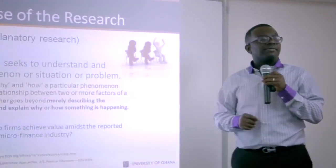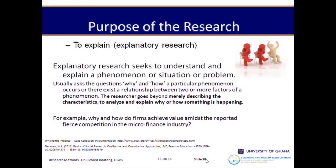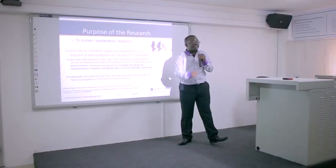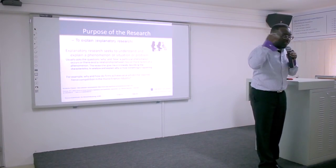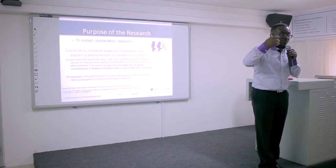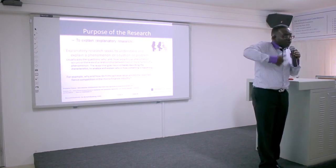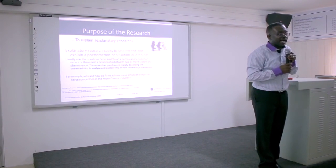In explanatory research, we want to know why and how a particular phenomenon occurs or exists, or the relationship between two or more factors within a phenomenon. For example: why and how do firms achieve value amidst reported fierce competition? Somebody did a research to establish that there was fierce competition — now another person is doing research to find out how firms are surviving in that fierce competition. You have established through descriptive or exploratory research that there is fierce competition, and now you go behind it to establish why and how it occurs.